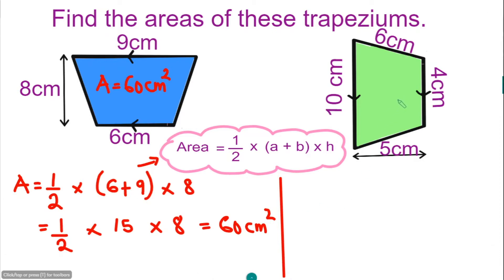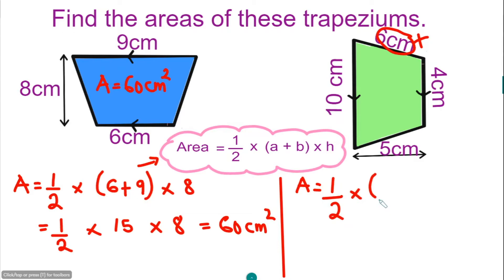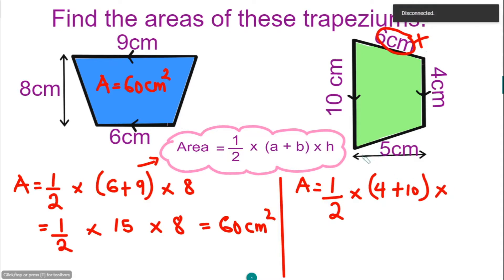For the other trapezium, which flips to the right side, we can immediately see that the top is 4 cm and the bottom is 10, and the vertical height is 5. The 6 is a sloping height so we don't need it. The area is going to be a half, multiply the sum of the parallel sides: 4 plus 10, and multiply by the vertical height which is 5.